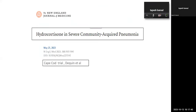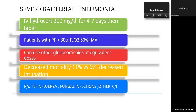Regarding antibiotics and steroids — the CAPE COD trial by Dequin et al., published recently in NEJM, studied IV hydrocortisone 200 mg/day for 4–7 days then tapered in patients with severe bacterial pneumonia (PaO2/FiO2 <300, on mechanical ventilation, or requiring >50% FiO2). They found decreased mortality — 11% versus 6% — and a decreased rate of intubation. The trial excluded TB, influenza, fungal infections, and other steroid contraindications.